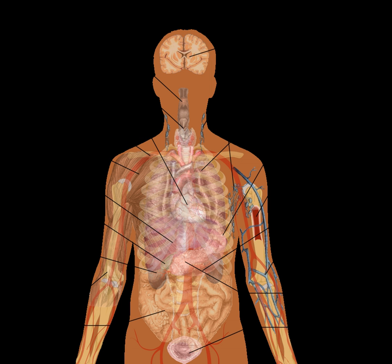Digestive system: digestion and processing food with salivary glands, esophagus, stomach, liver, gallbladder, pancreas, intestines, colon, rectum and anus.